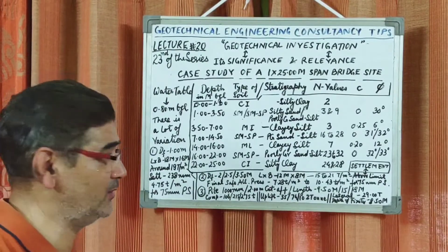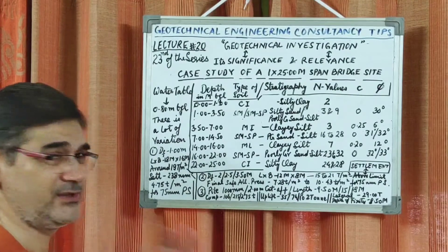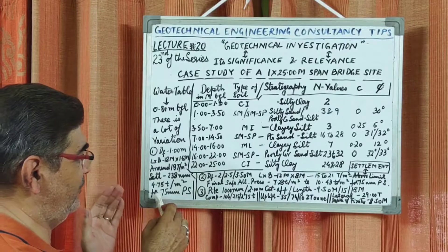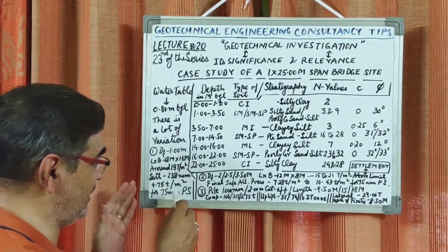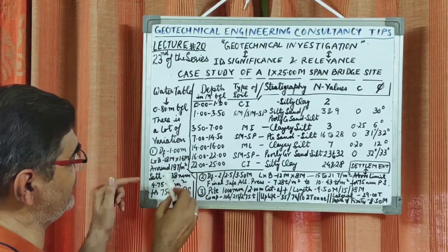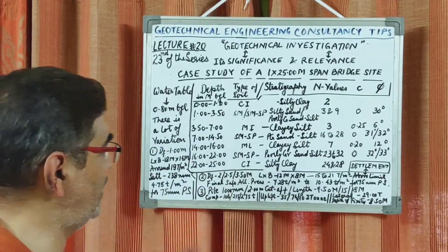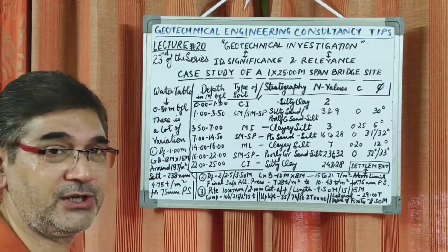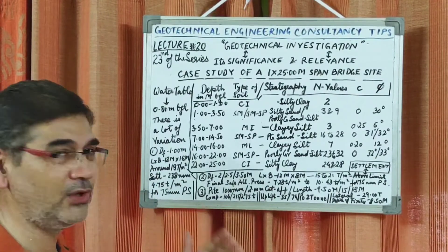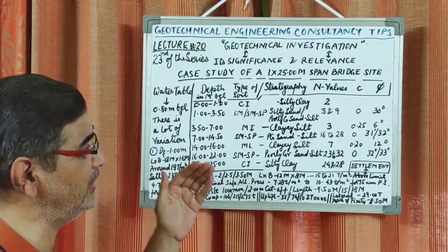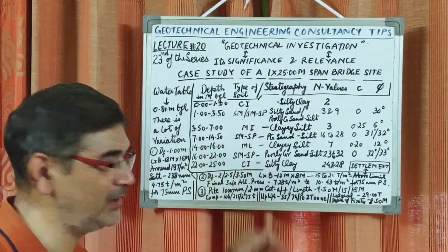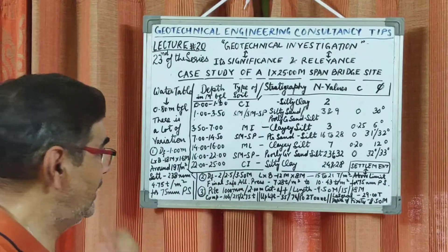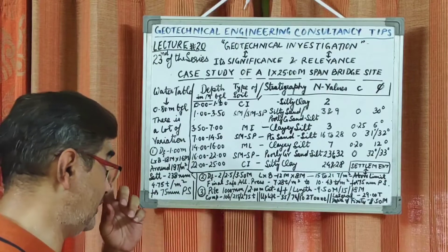As per the relevant Indian Standard code IS 1904 (also referred to as IFC 70 etc.), in order to achieve the desired permissible settlement value of 75 mm, the allowable bearing pressure came down to only 4.75 ton per meter square, which was found to be quite insufficient for the design of that foundation. Then we again had discussions with the structural engineer. What I want to emphasize from this case study is that we have to be very cautious while doing the field investigation, the laboratory tests, and finalizing the report, since ultimately the bridge has to be built there.